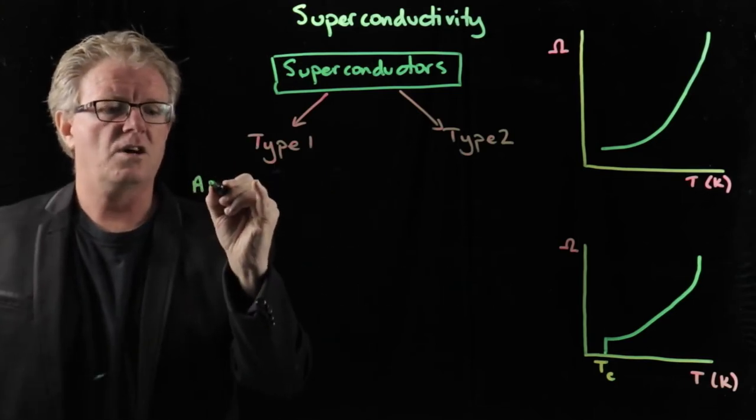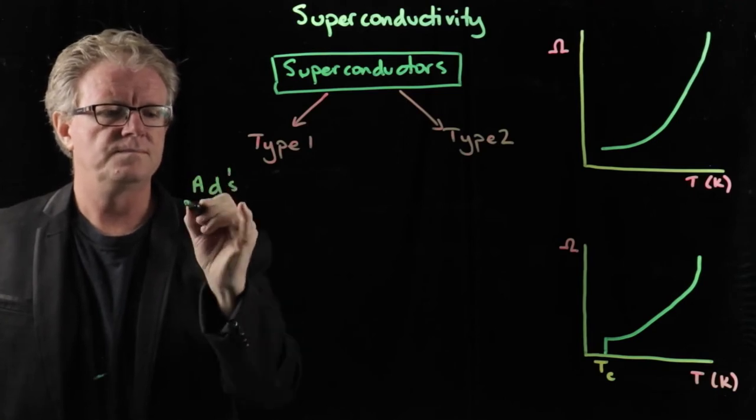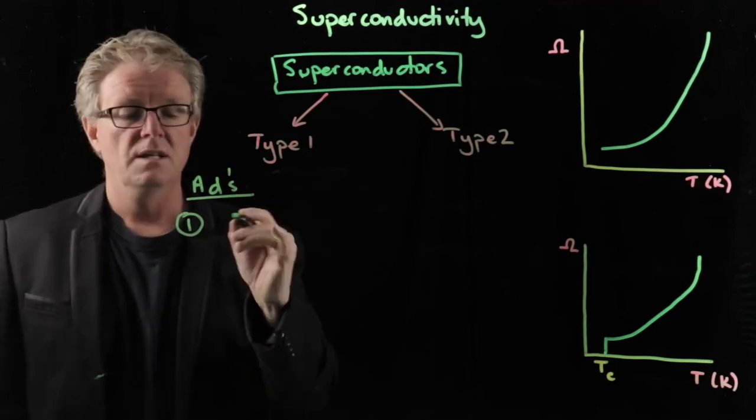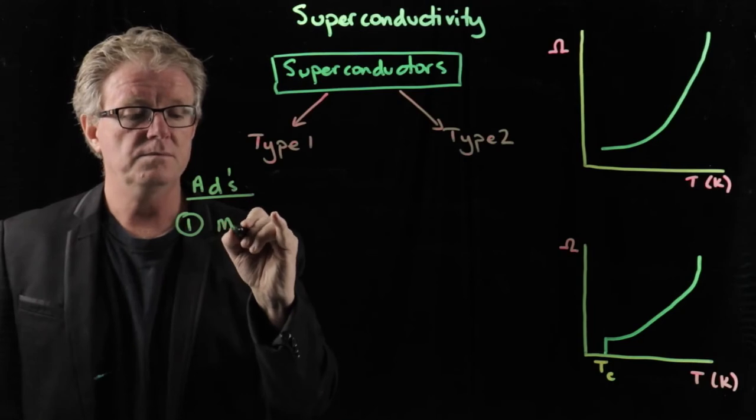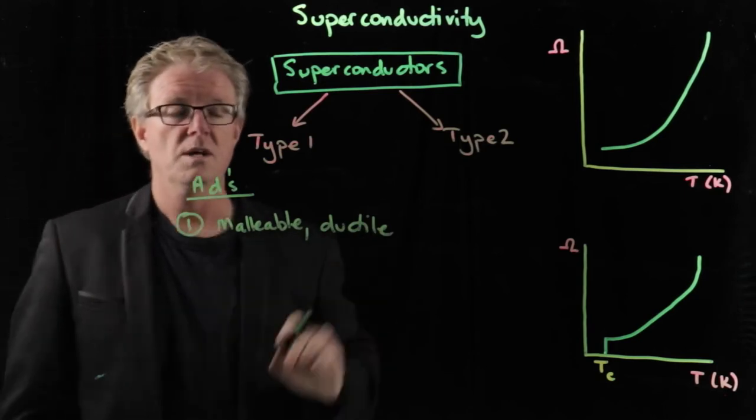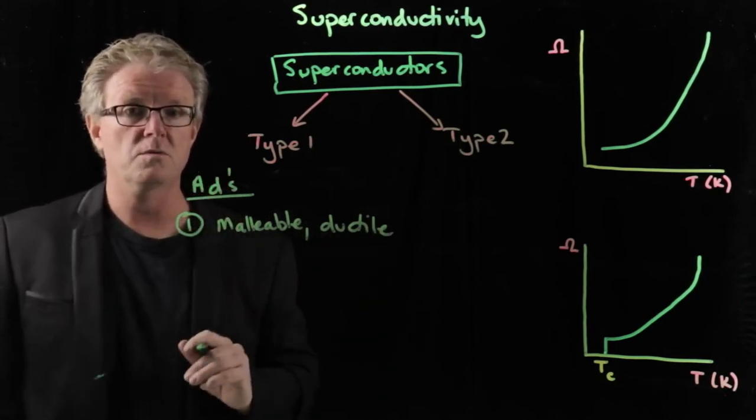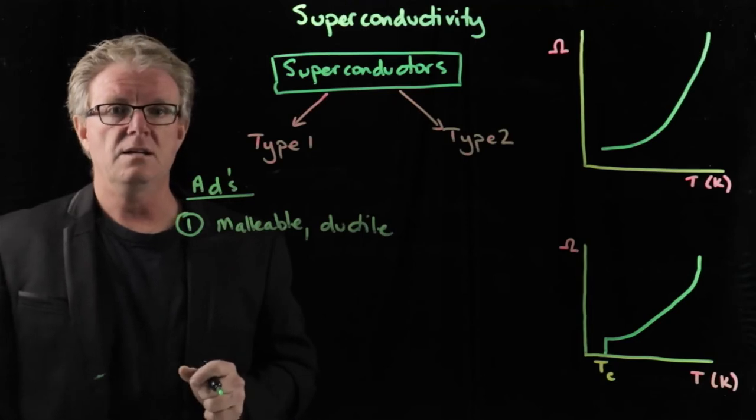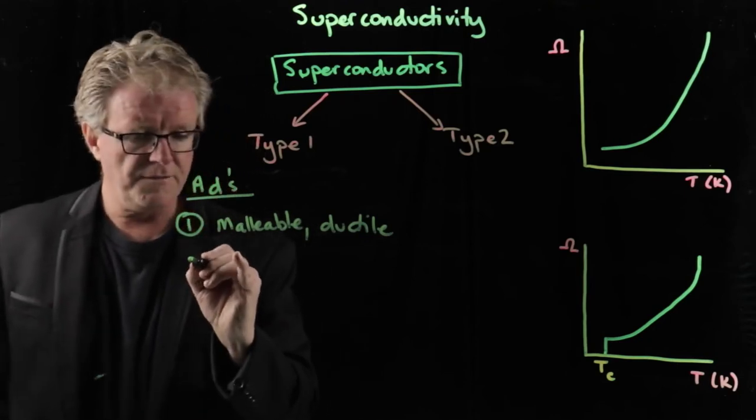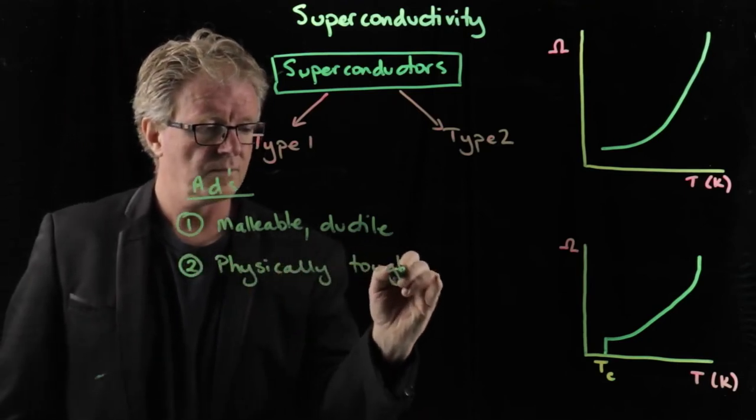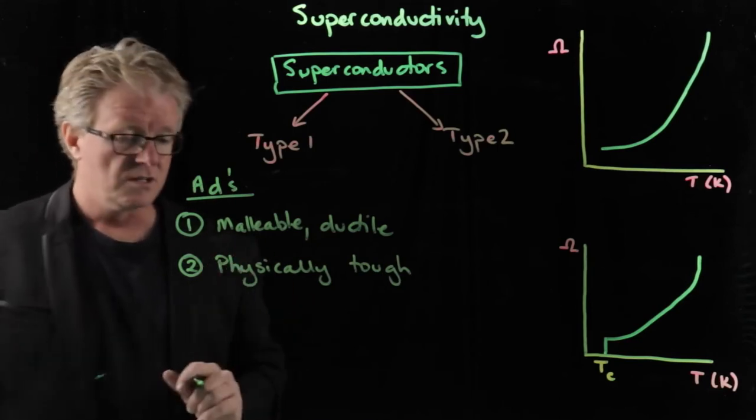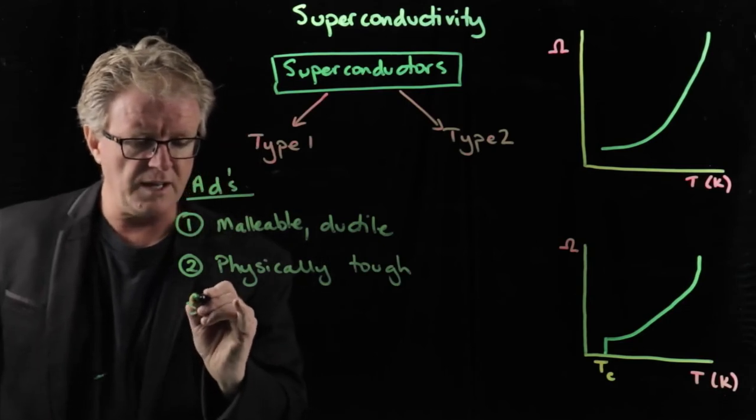Let's look at the advantages. So the advantages of type 1, first of all, is that they're easy to work with. So they're metals. Therefore they're malleable and ductile. So we can draw them into wires, which is perfect if we wanted to look at making circuit boards, if we wanted to incorporate them in transmission wires. So ductile and malleable, perfect. They're easy to work with. They are physically tough, so they stand up to the rigors of environmental conditions. And the third one is that they're easily available or easily made.